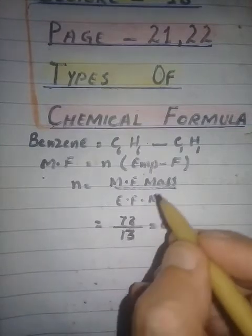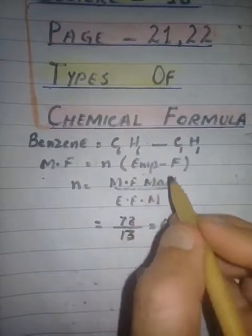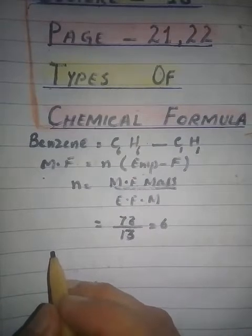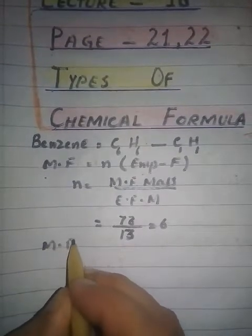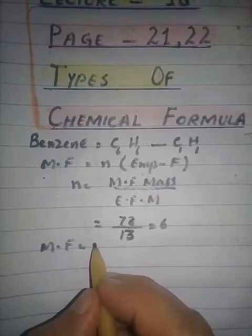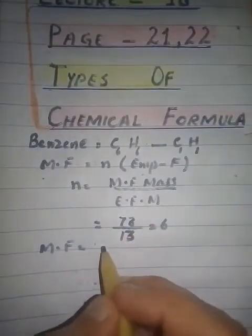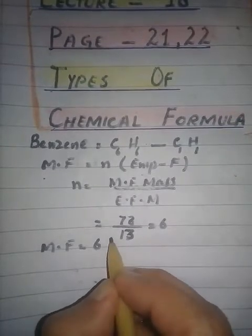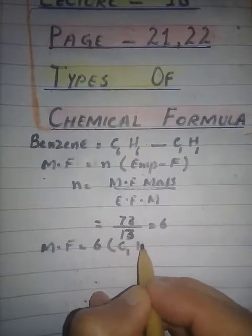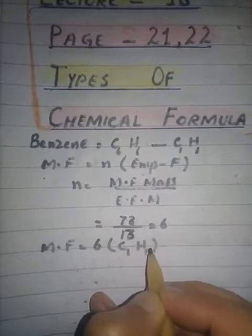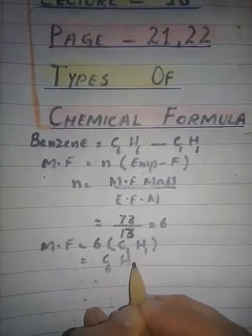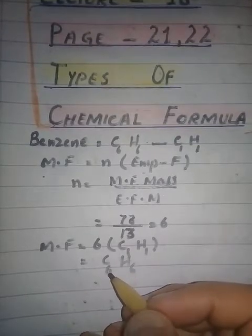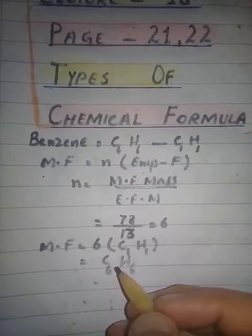Putting this into the formula: molecular formula = N × empirical formula. N is 6 and the empirical formula is C1H1, so the molecular formula becomes C6H6 — that is the molecular formula of benzene.